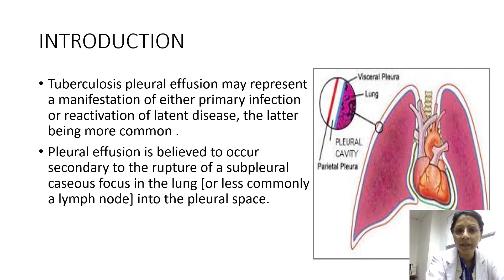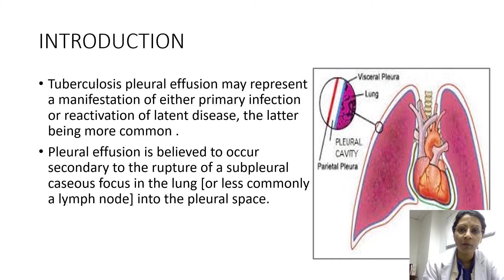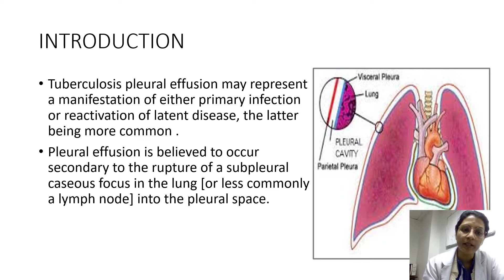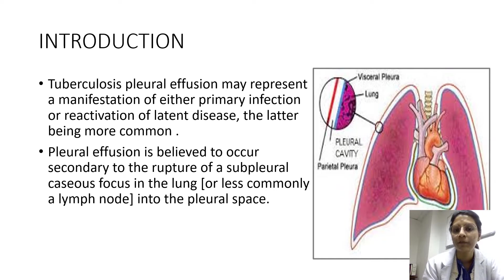Pleural effusion is believed to occur secondary to the rupture of a subpleural caseous focus in the lung. This is the Ghon focus area, where tuberculosis infection is most common — in the lower part of the upper lobe or the upper part of the lower lobe. Effusion occurs when such a focus ruptures into the pleural space, causing a hypersensitivity reaction with collection of fluid.